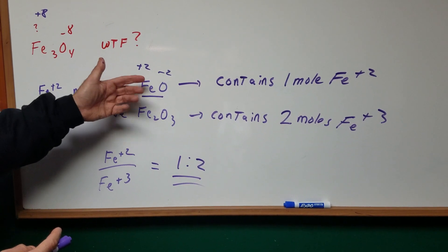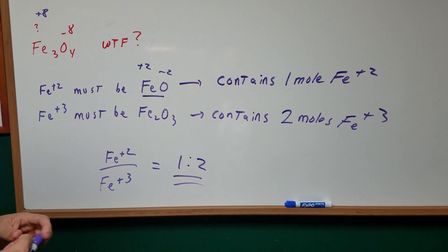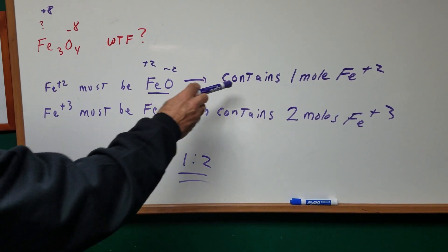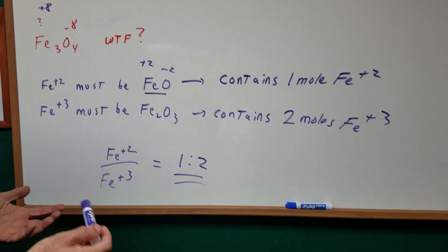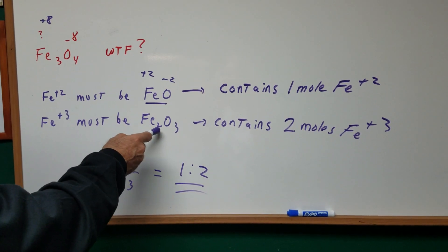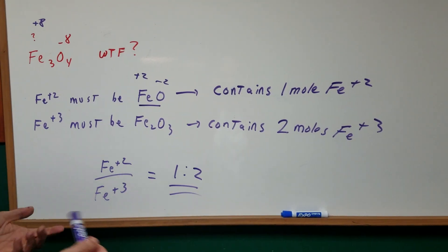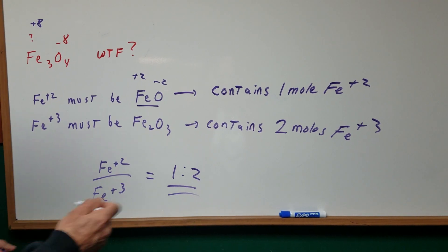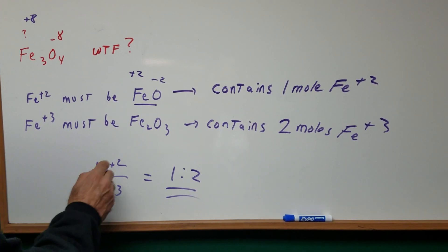In FeO we have one mole of Fe+2. In Fe2O3 we have two moles of Fe+3. So as you can see there's one mole of Fe+2 and there's two moles of the Fe+3.